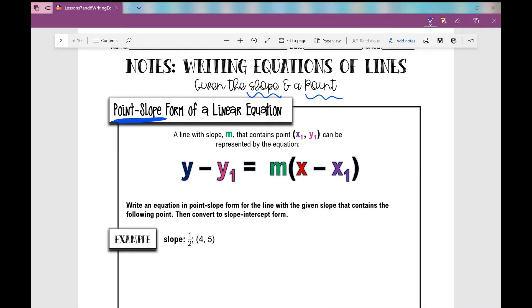Here's what it looks like. A line with slope m that contains the point x sub 1, y sub 1 can be represented by the equation: I take y and I subtract y sub 1, so whatever that y value is, equals m times open parentheses x minus x sub 1, that x value of the point.